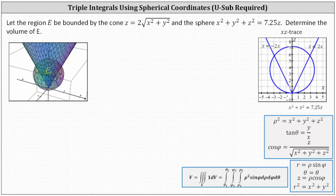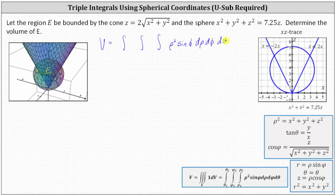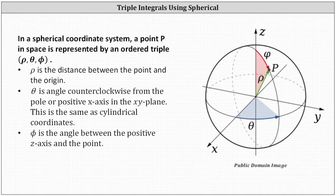Now let's begin to set up the triple integral in spherical coordinates that will give us the volume. Because we're using spherical coordinates, we have rho squared sine phi d rho d phi d theta. For a quick review: rho is the distance between the point and the origin; theta is the angle counterclockwise from the positive X axis in the XY plane; and phi is the angle between the positive Z axis and the point, all of which are illustrated here on the right.